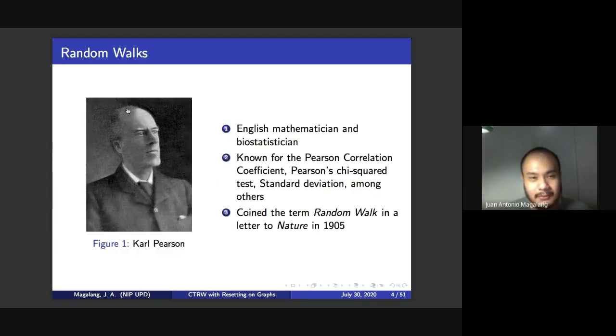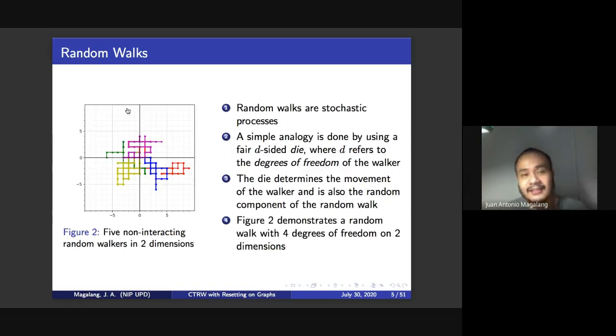First is the problem of the random walk, as you all know, coined by Carl Pearson. And here's a simple implementation of a random walk in two dimensions shown in figure two. So we describe this simple random walk by taking a die, a four-sided die, and rolling the die determines which direction the walker would go in this two-dimensional plane.